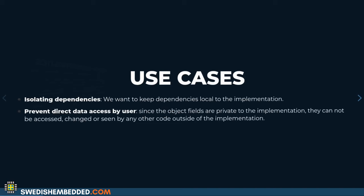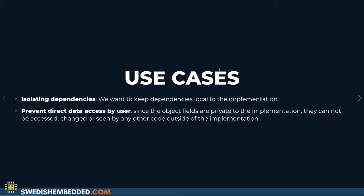There are two main use cases for the opaque pattern. Number one: we want to isolate dependencies so that dependencies the data structure relies on are not visible to anybody who includes the header file. Number two: we want to prevent direct data access by the user, so no other code can modify the internal data structure. This lets us introduce thread safety and concurrency protection if needed.